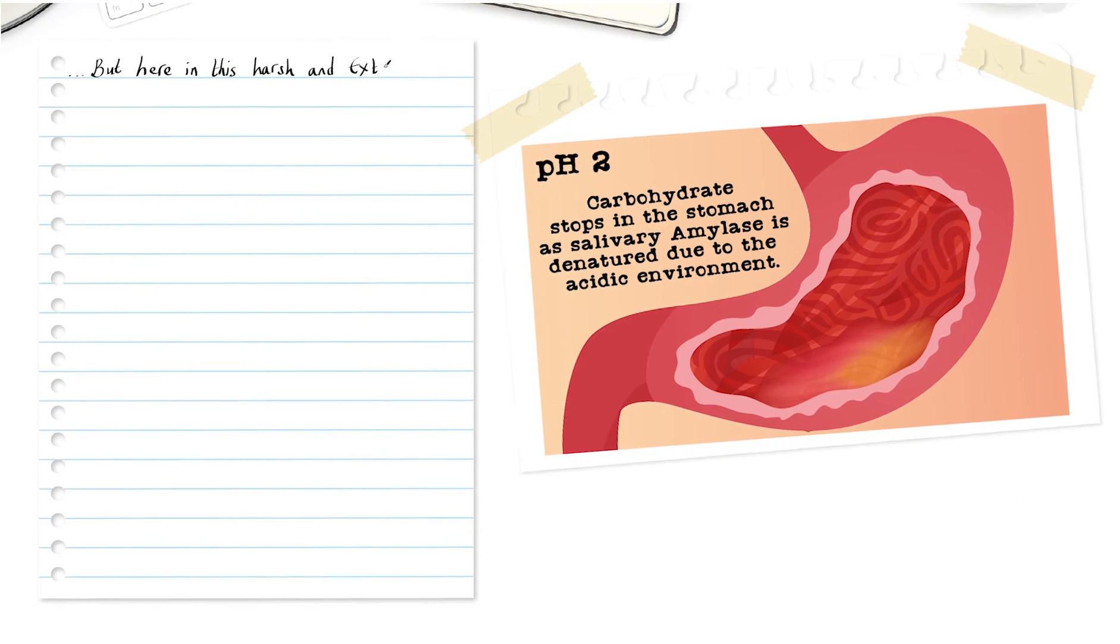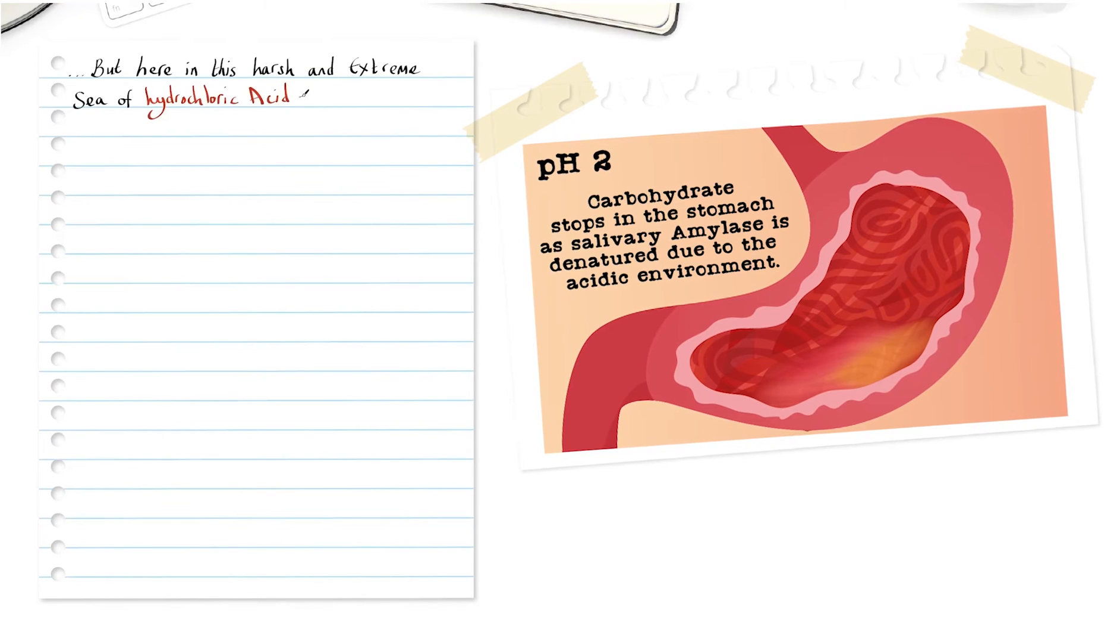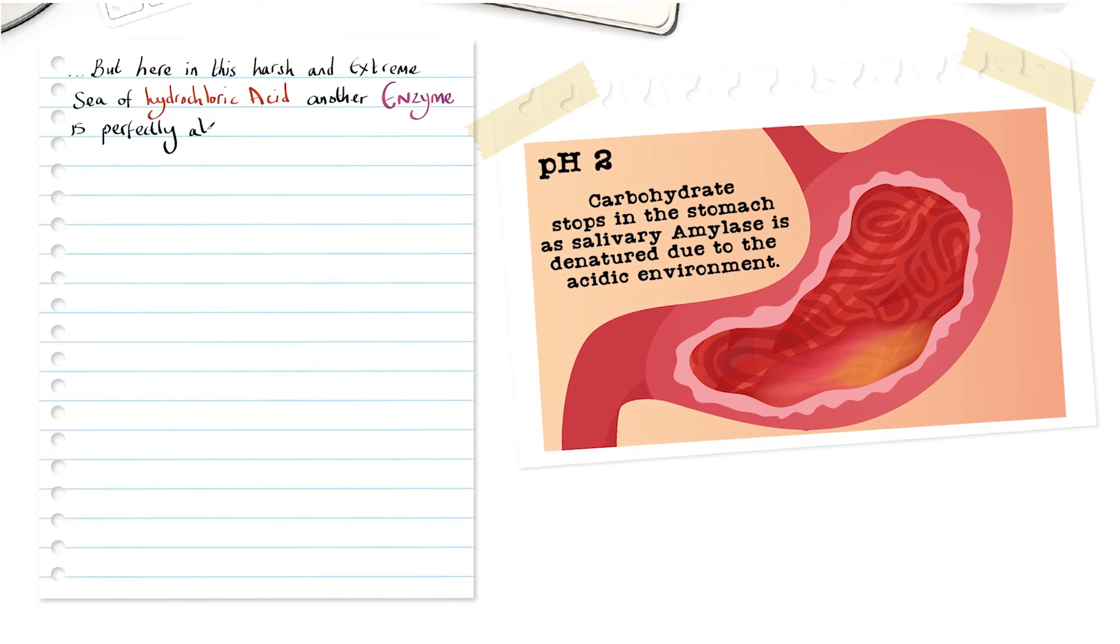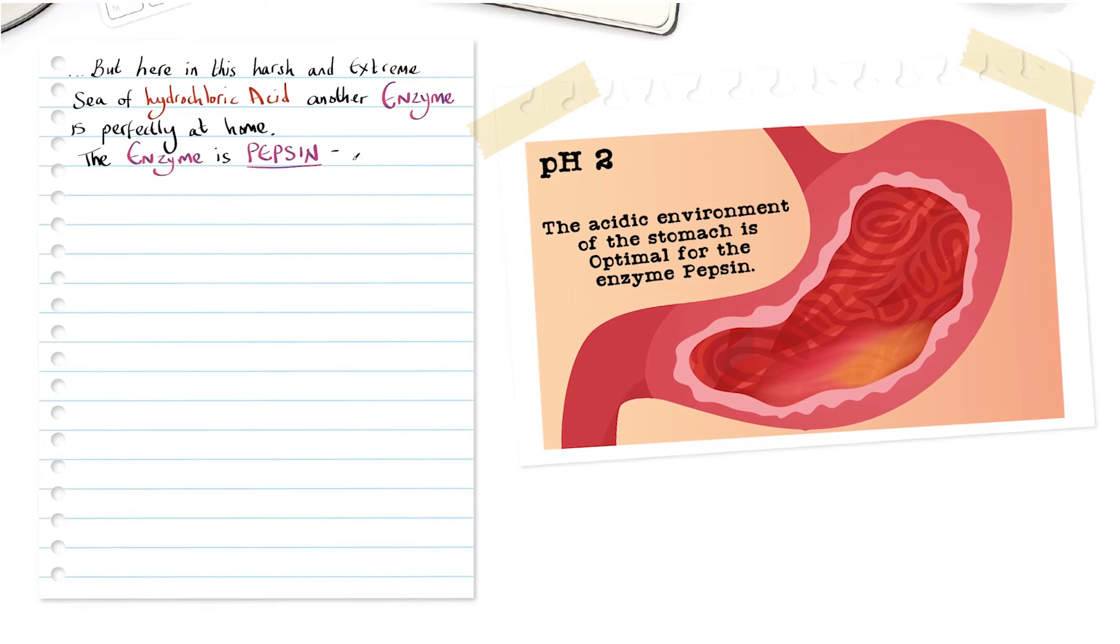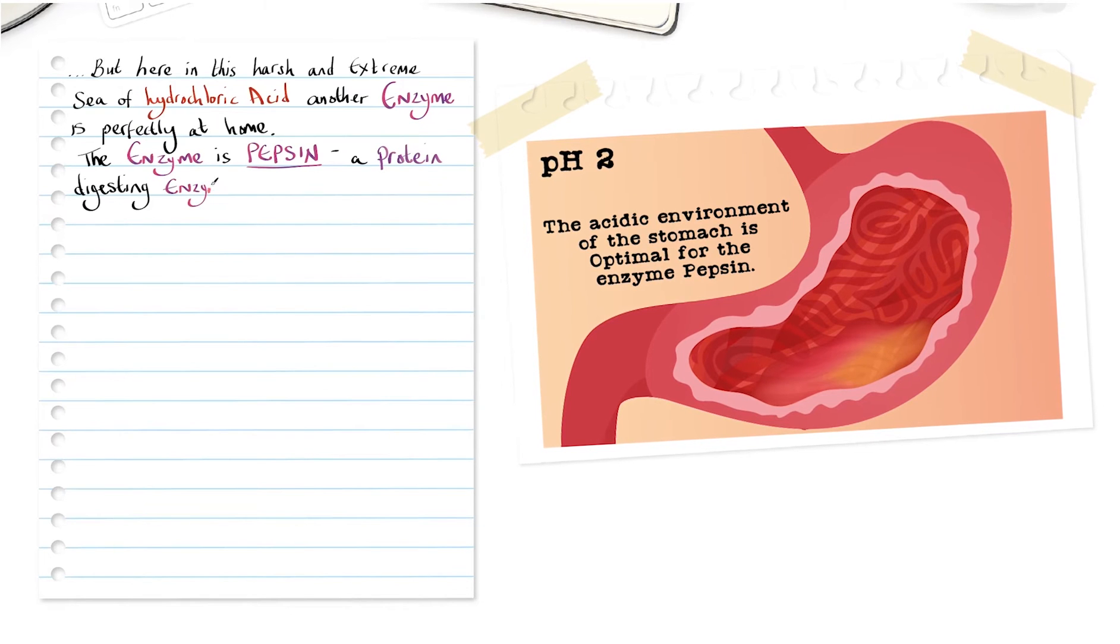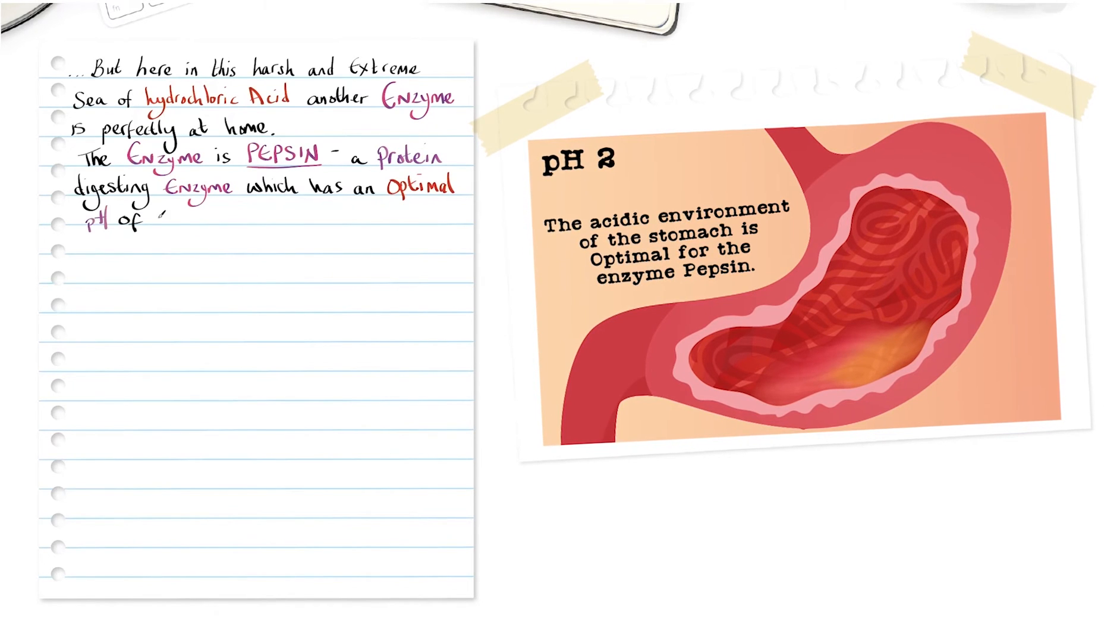But here, in this harsh and extreme sea of hydrochloric acid, another enzyme is perfectly at home. The enzyme is pepsin, a protein digesting enzyme which has an optimal pH of approximately 2.